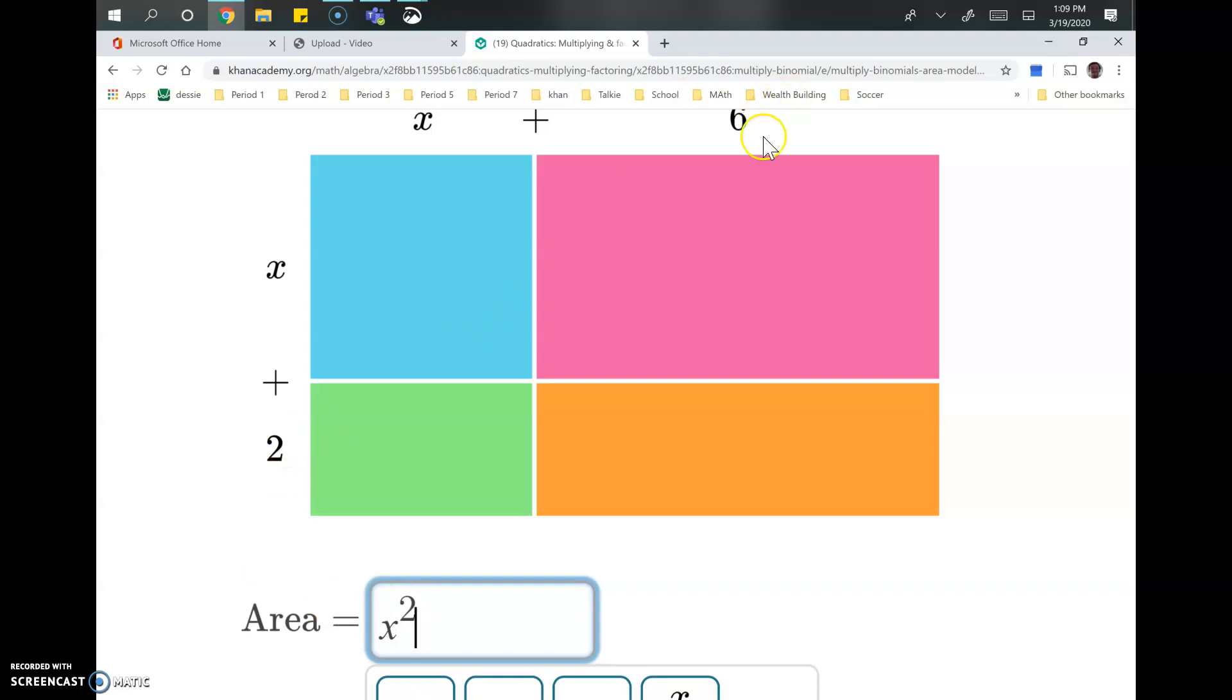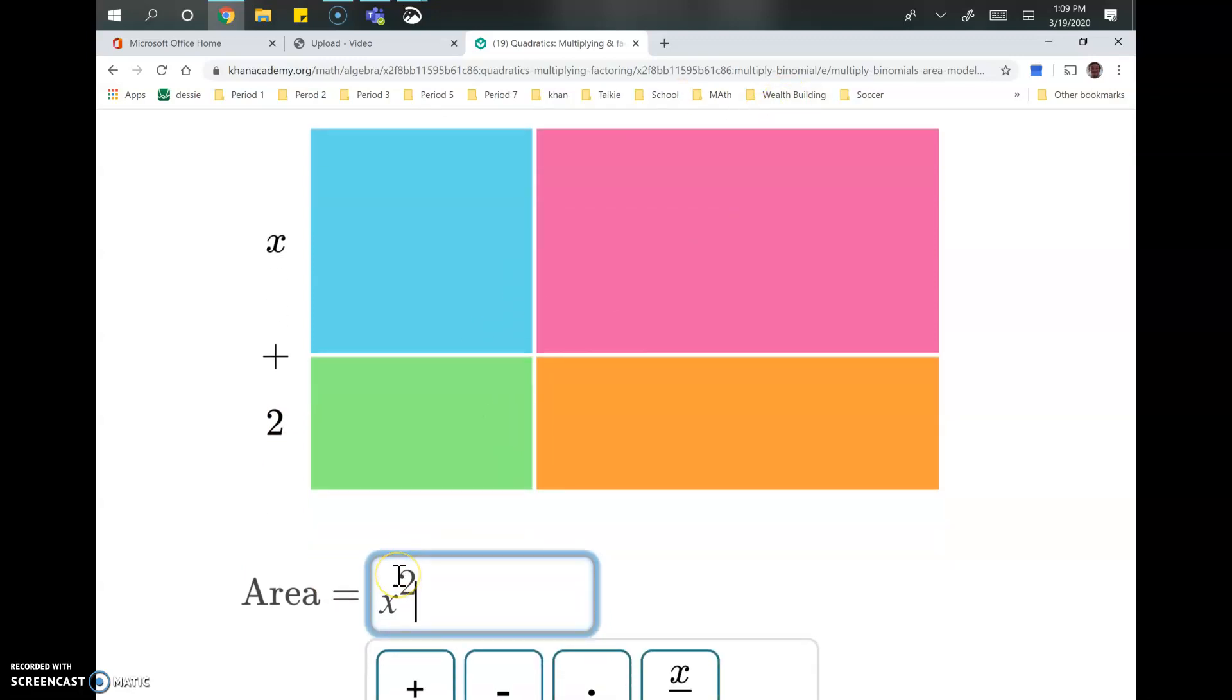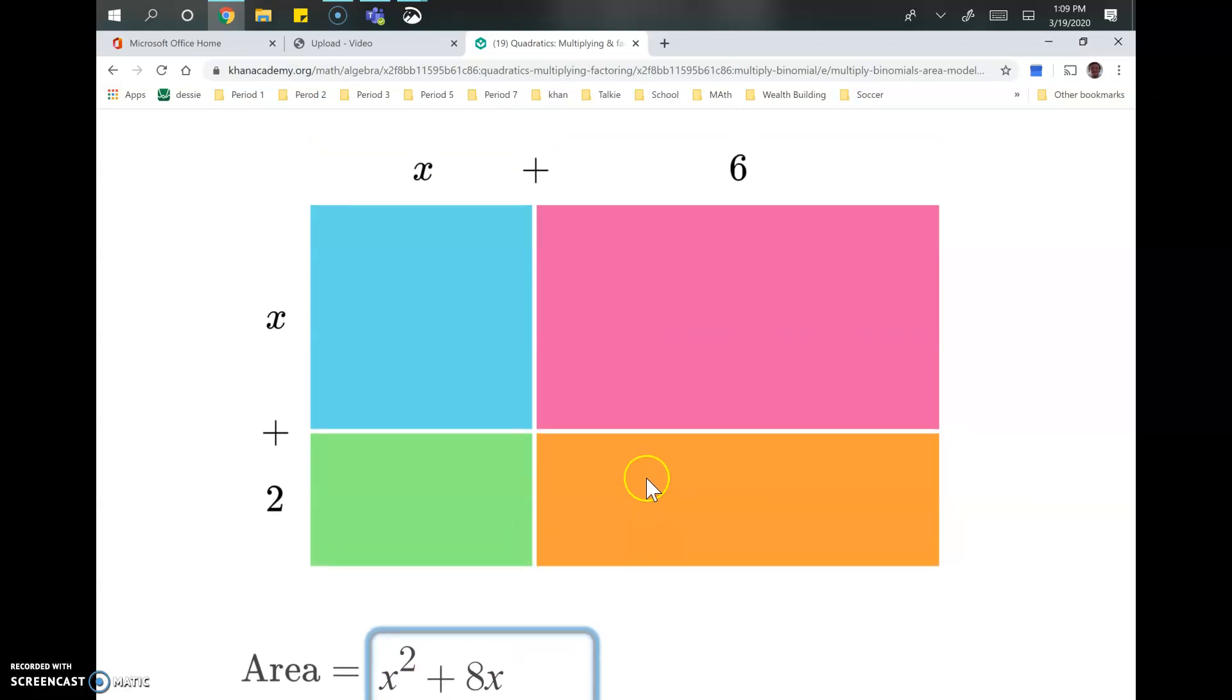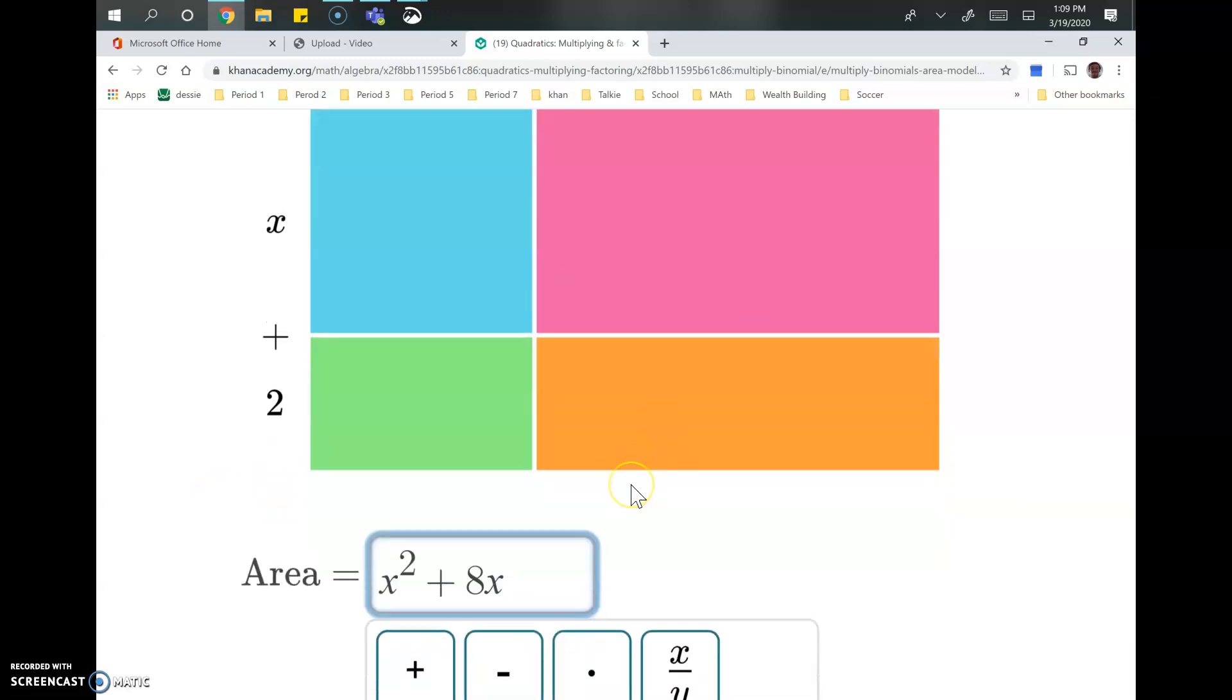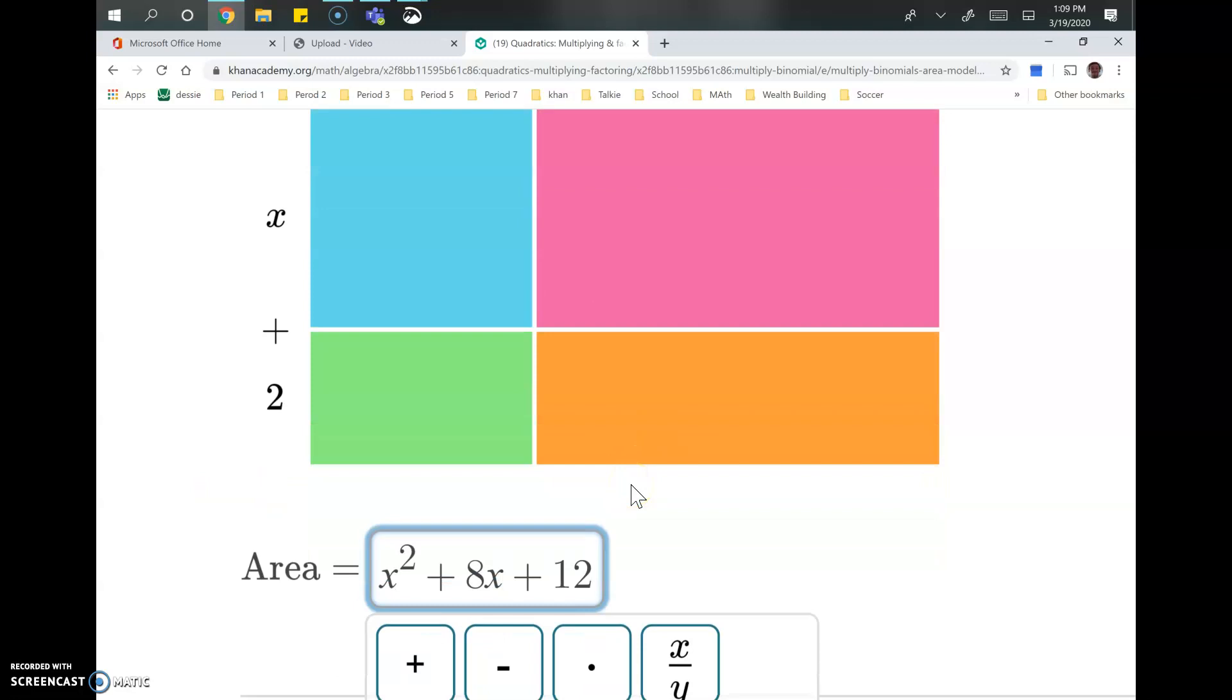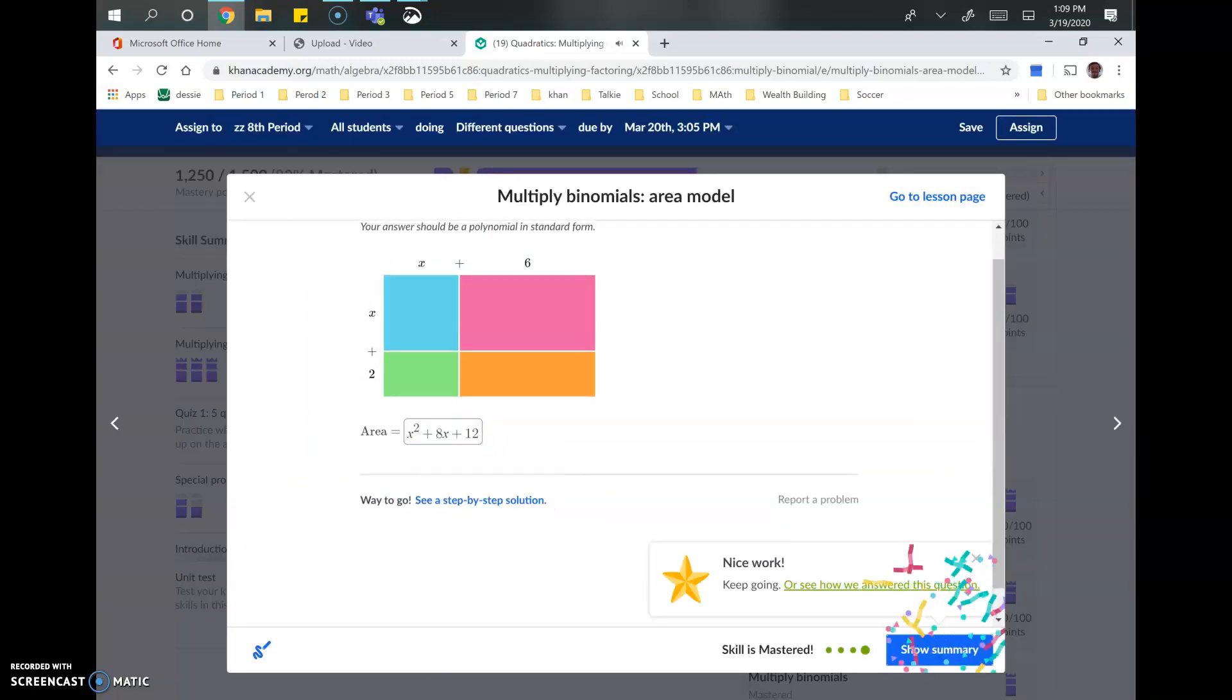And then 2 plus 6 is 8. And that's the x term. And then the final one, the constant term, 2 times 6 is 12. Boom. And that's how you multiply binomials using the area model. Good luck.